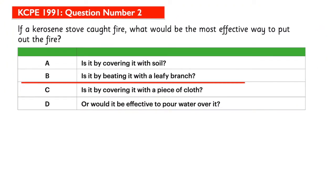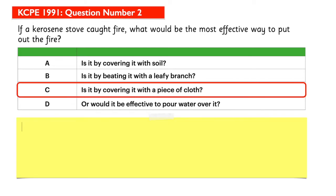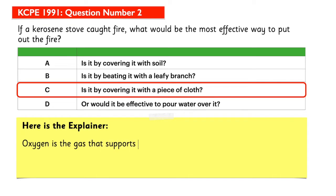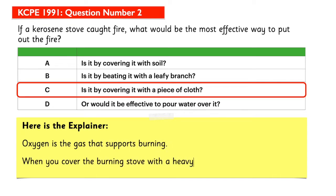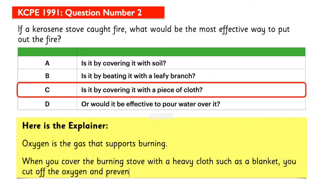The answer is C. Here is the explainer: oxygen is the gas that supports burning. When you cover the burning stove with a heavy cloth such as a blanket, you cut off the oxygen and prevent it from reaching the fire. This puts out the fire.